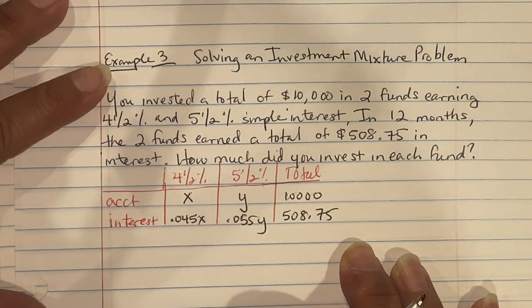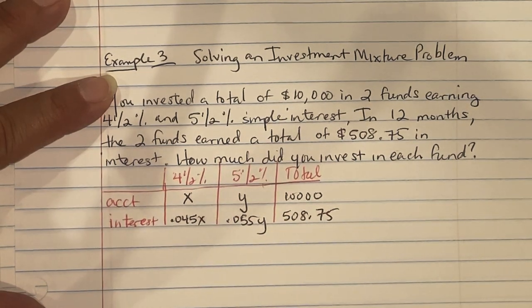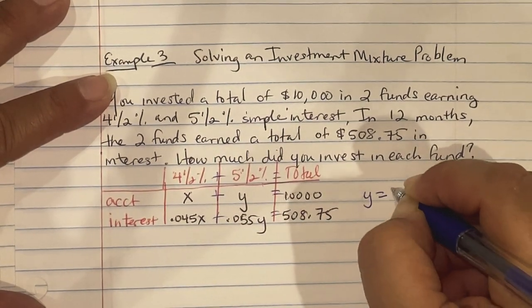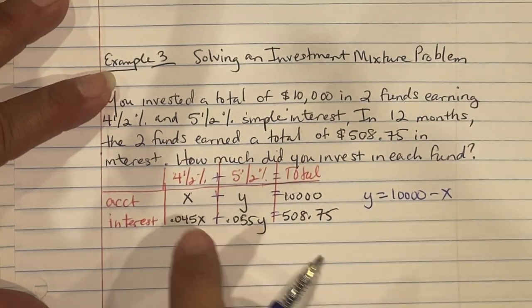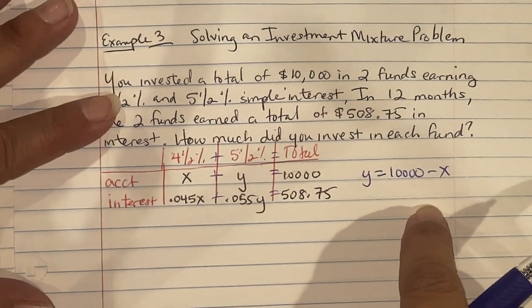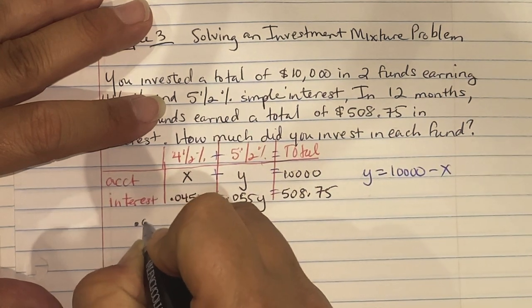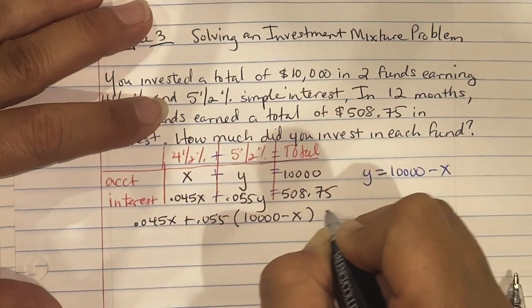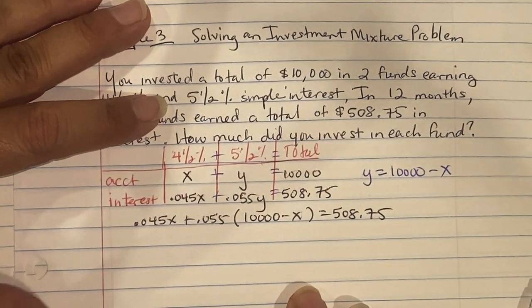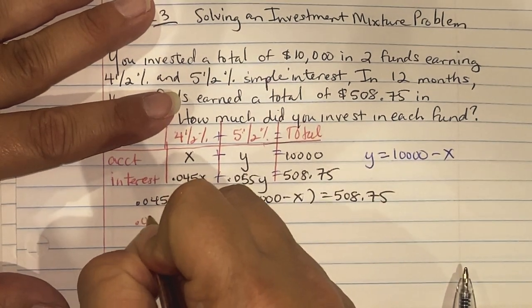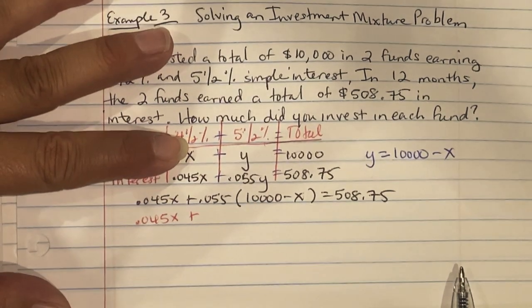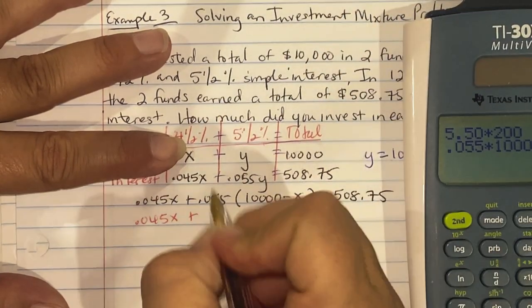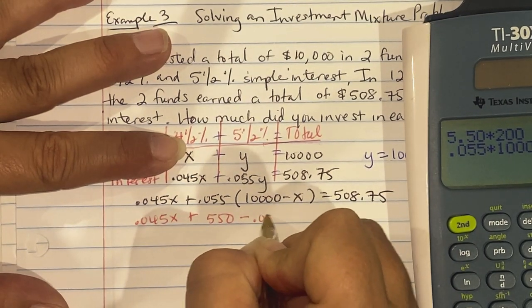So we're going to solve. Remember that these are being added together to total something. So I'm going to say that Y is the same as $10,000 minus X. So I'm going to use the second equation and replace Y with its substitution. I'm going to say 0.045X plus 0.055 times (10,000 minus X) equals 508.75. Distributing, 0.055 times 10,000 is 550 minus 0.055X equals 508.75.